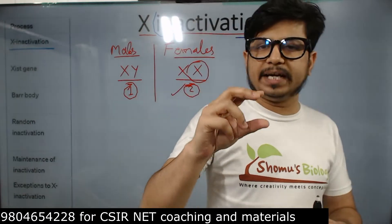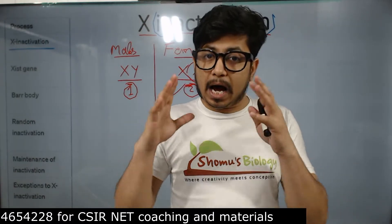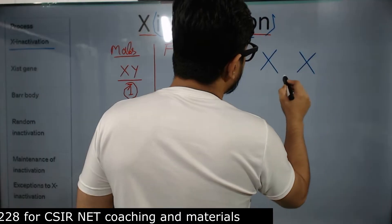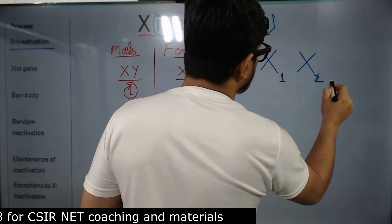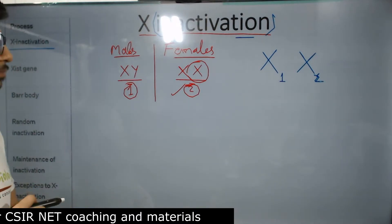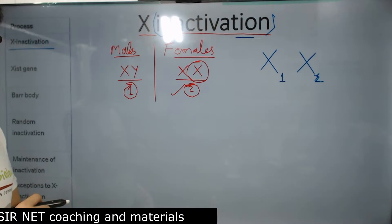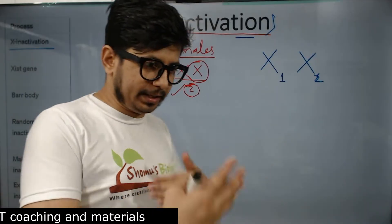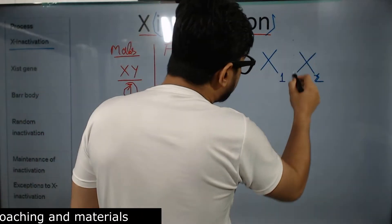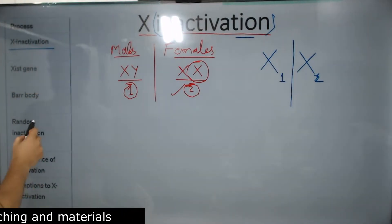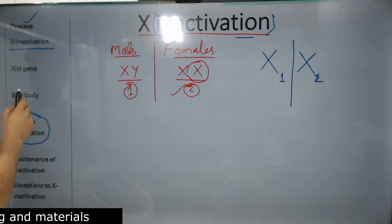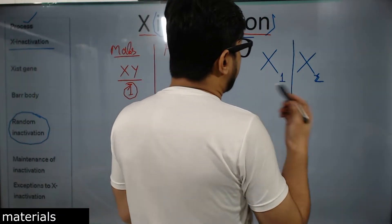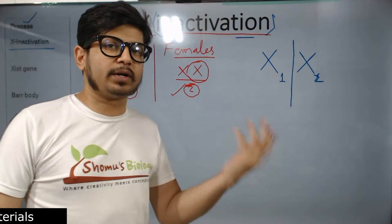Let's imagine there are two X's — X1 and X2. Between these two, only one will be selected to be inactivated. This X-inactivation process takes place at the early stage of development. While development occurs, at that early stage, randomly one of the X's will be selected. So an important property is that this process of X-inactivation is random in nature — either X1 or X2 can be selected for inactivation.